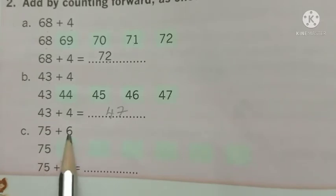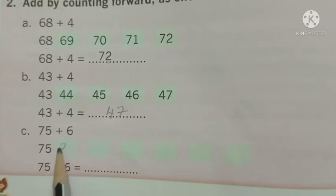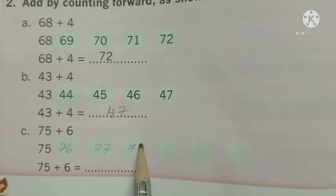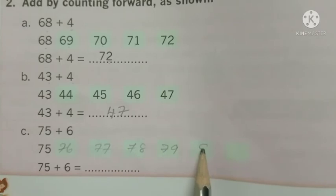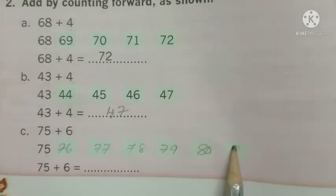After 75 we have to write 6 more numbers. 75, 76, 77, 78, 79, 80, 81.